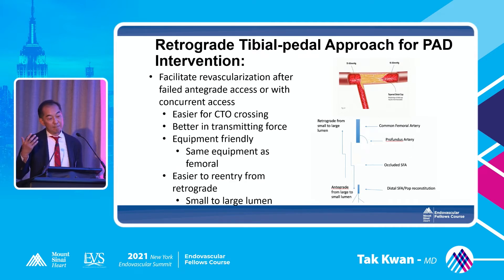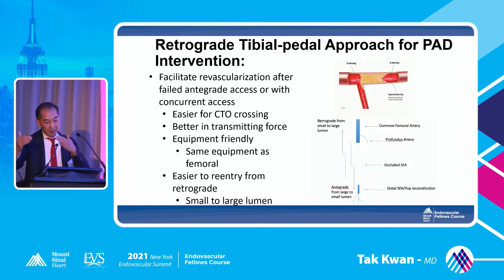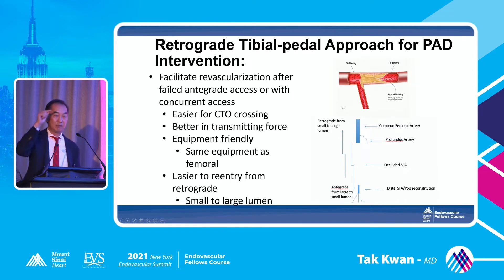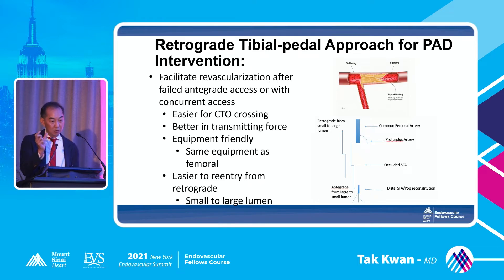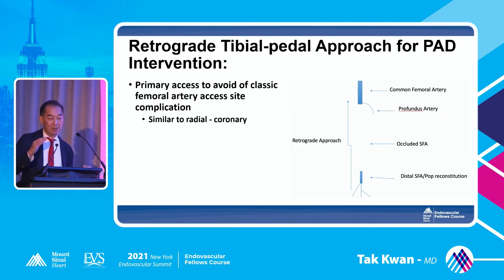The usual thinking is to facilitate revascularization after a failed antegrade access. When we do femoral access and fail, we use pedal access going up to revascularize — for example, a CTO of the SFA. Retrograde is easier because the pressure gradient is usually lower, making CTO crossing easier with less calcium and less fibrosis. The force going retrograde is very easy to transmit, and equipment fits quite well going up through the pedal. Re-entry from a small lumen into a bigger lumen retrograde is not that difficult. But the talk today is about primary pedal access, which is really similar to radial coronary.